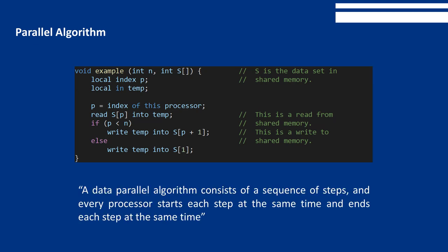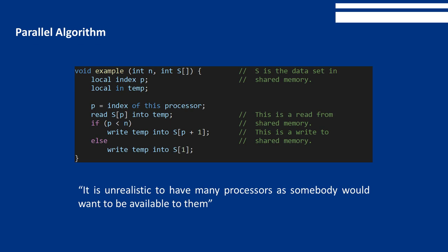A data parallel algorithm consists of a sequence of steps, and every processor starts each step at the same time and ends each step at the same time. As said earlier, it is unrealistic to have as many processors as somebody would want available to them. Despite that, an algorithm is provided to present these conventions.